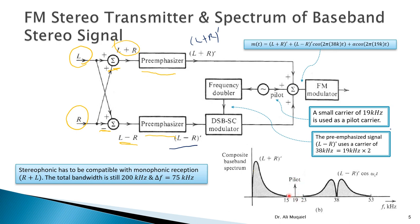A gap is left between 15 and 23 kHz to allow the receiver to use a narrow filter to recover the carrier for demodulation. Why 19 kilohertz specifically? If the pilot were 25 kHz, the shifted signal would go to 50 kHz, wasting space. If it were less than 15 kHz, the doubled frequency would overlap with the original signal. The choice of 19 kHz ensures the signal is not too spread out and does not overlap with the original baseband signal.